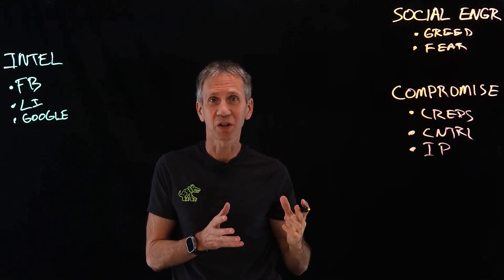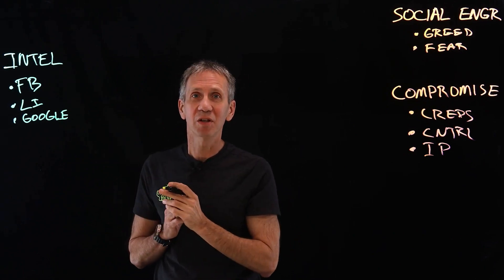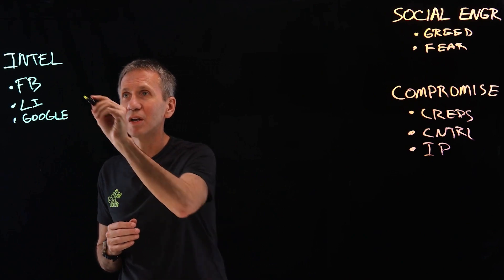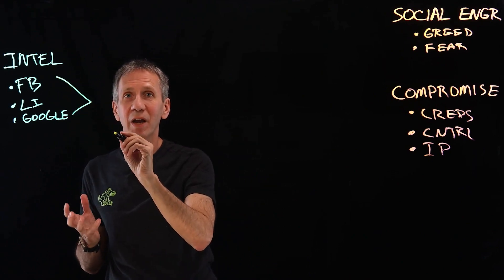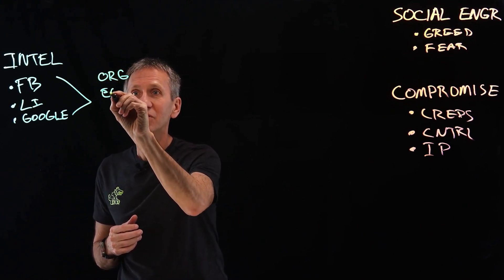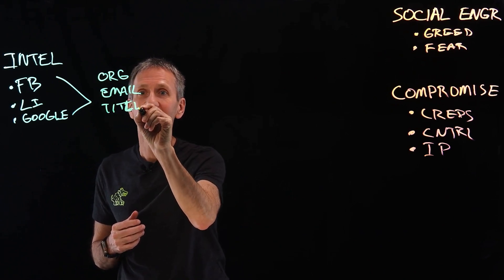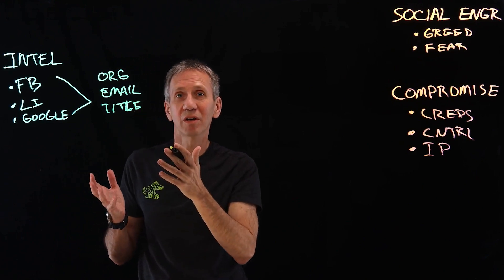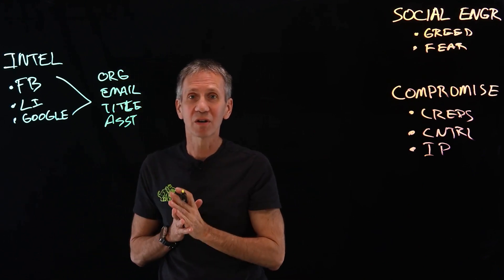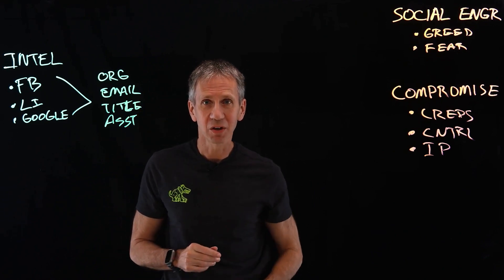We're going to do what's known as a spear phishing attack, where we send a phishing email that's very targeted because we've done this intel — that's why it's more successful, because generic phishing people tend to ignore. From these sources, I'm able to ascertain the organization my victim works for, their email address, their title, who their administrative assistant is. A lot of information is online, and I'm going to harvest it and take advantage of it.